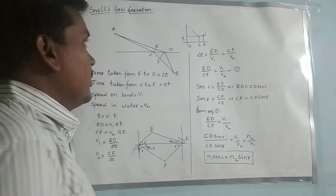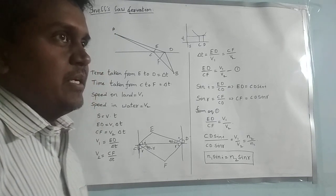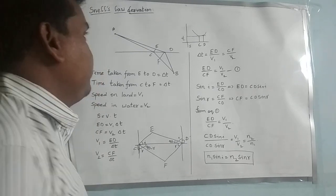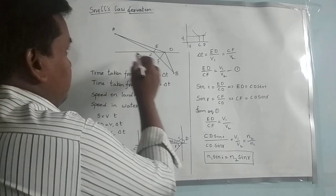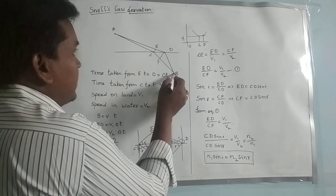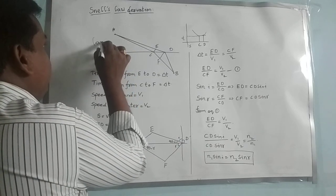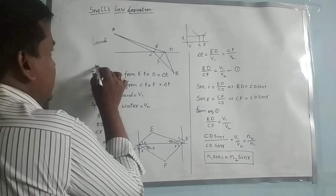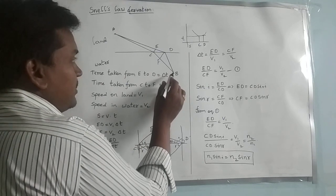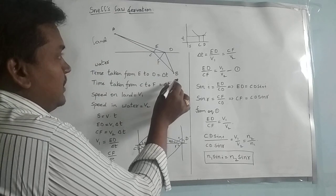What we are going to show is that sine i by sine r is constant — that means the sine of the incident ray and the sine of the refracted ray remain the same. Consider an example: here is person A and here is person B. A is on the land and B, unfortunately, slipped into the water. B is screaming for help, so A saw B and A has to save B.